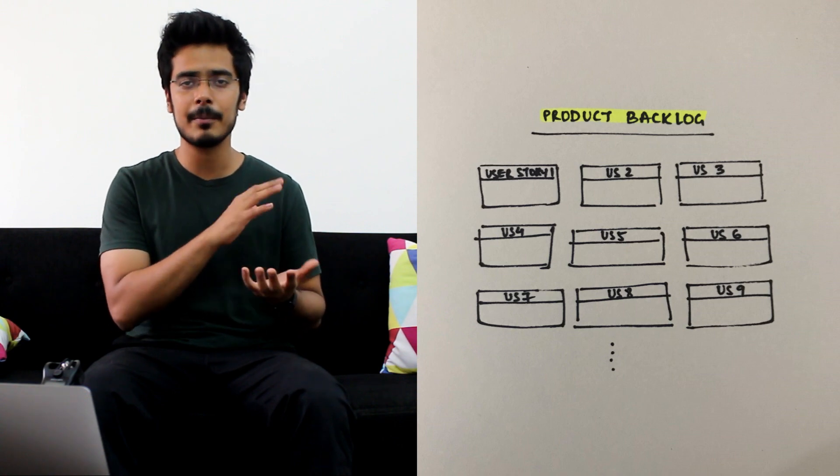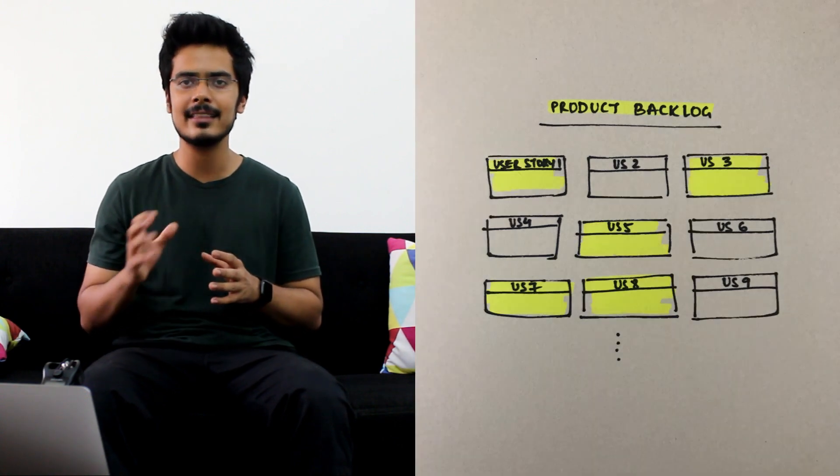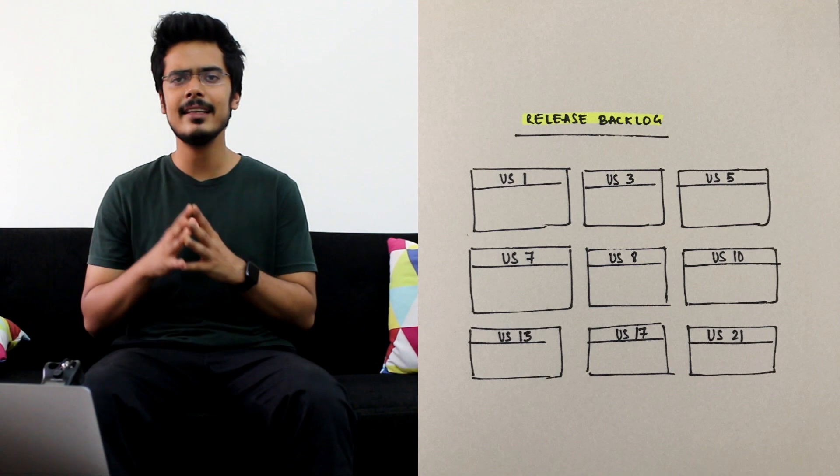Let us now look at how all of these teams come together to ship product X. It starts with the product owner. The product owner picks stories from the product backlog which needs to go in the next release cycle. This is called the release backlog.